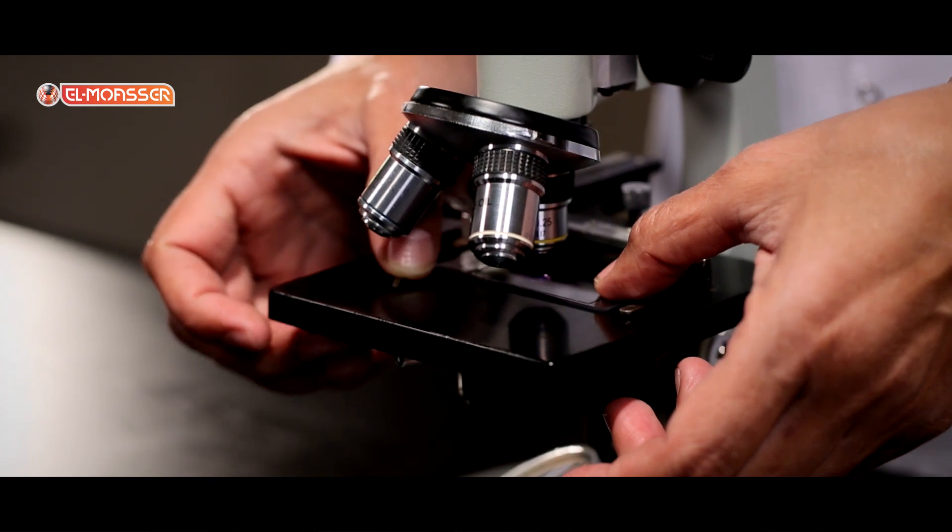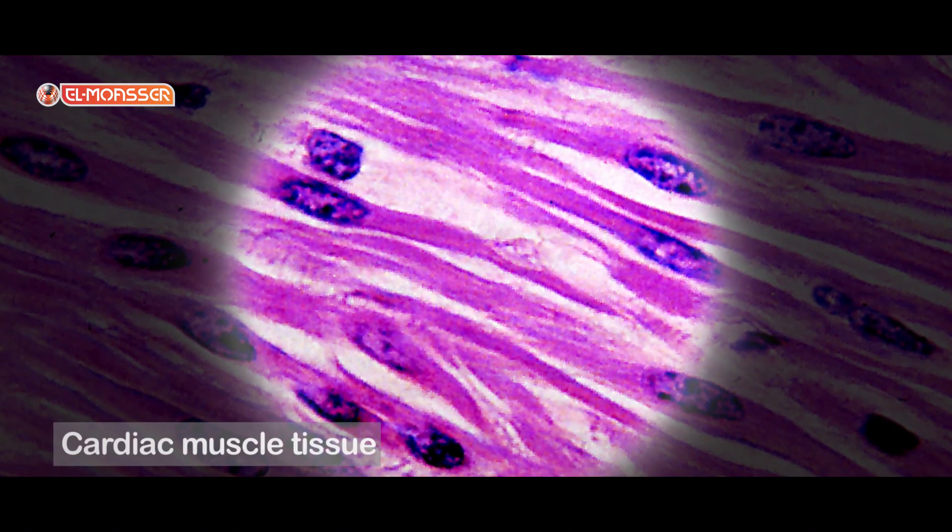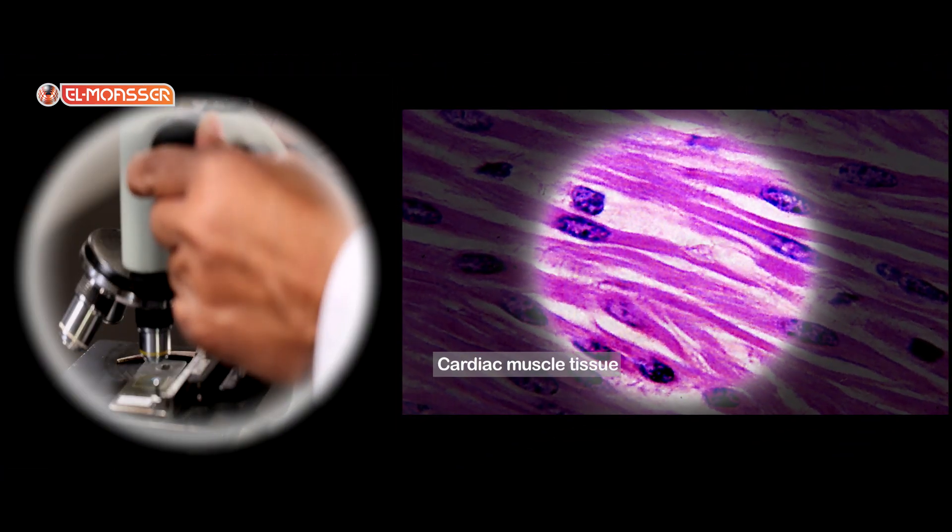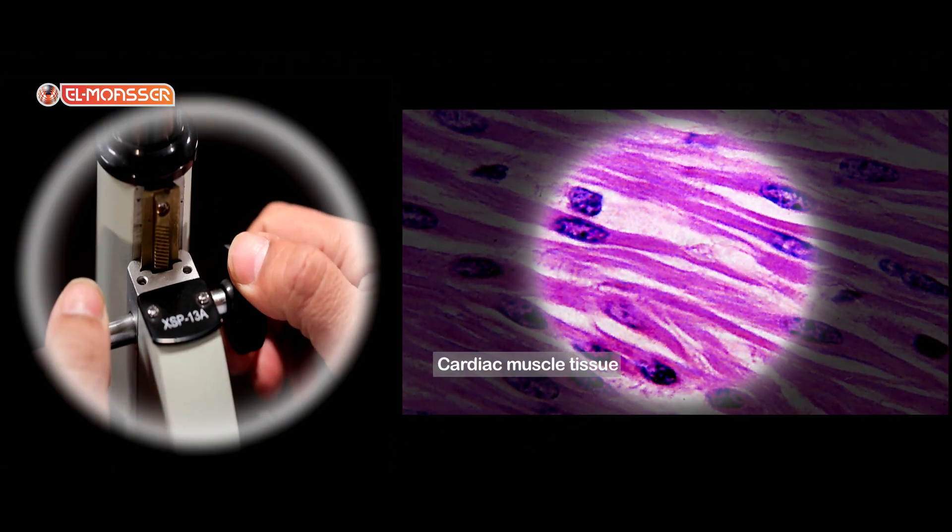Place the fourth slide on the stage. This is a cardiac muscle tissue section. The cardiac tissue is composed of branched fibers with a large nucleus.